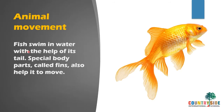Fish is also a type of animal. It swims in water with the help of its tail. The tail of the fish helps it to take turns and change direction. Special body parts called fins also help the fish to move. So with the help of fins and its tail, the fish swims in water.